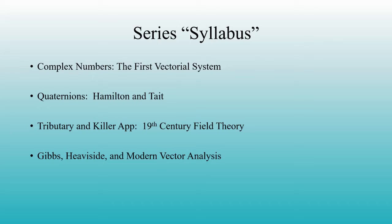Here is the high-level description for how this series is going to play out. I'm going to begin with the history of complex numbers. It turns out that complex numbers expressed in the 2D complex plane are in fact the first vectorial system and the one that inspired the others. Next up is quaternions, a strange 4D mathematical construction still used today in a few places. The major names here will be William Rowan Hamilton and Peter Guthrie Tait. I will then talk briefly about the dawn of classical field theory, because in the hands of James Clerk Maxwell, the mathematical description of Faraday's electric and magnetic fields became the motivation for bringing quaternions into mainstream physics.